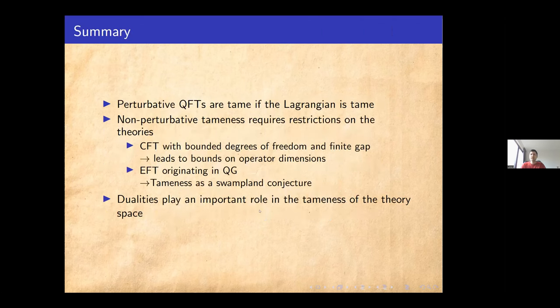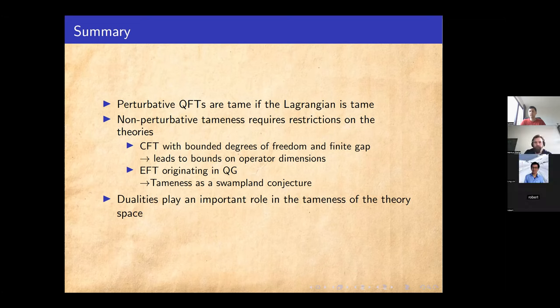Let me summarize. We have shown that perturbative quantum field theories are tame if the Lagrangian one starts with is tame. But non-perturbative tameness requires more restrictions on the theories. Looking at CFTs, we need to bound the degrees of freedom and demand a finite gap, and from this one can extract bounds on the differences of operator dimensions. Or we can look at general QFTs but require that these originate from quantum gravity, and then impose tameness as a new swampland principle to check if a quantum field theory is actually tame. Note this is of course a non-perturbative statement. Non-perturbative dualities play a really important role in making all of this tameness work out. It will be quite interesting to see how these are interconnected and how the tameness conjecture connects to all the other swampland conjectures.